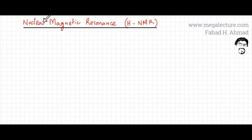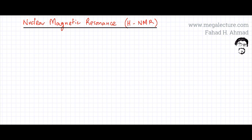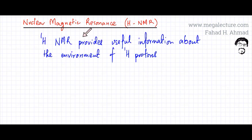In the following lecture, we're going to talk about nuclear magnetic resonance, which is an analytical technique. Specifically in this first lecture, we're going to study hydrogen NMR. H-NMR provides us with very useful information about the environment of hydrogen protons, so it's very useful in organic compounds.